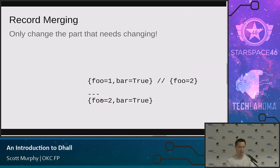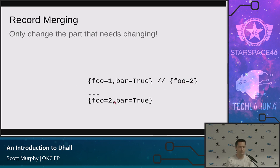Another feature is record merging. You can have some big long record, and if you just want a function that changes just one little piece of it, you can use the diffing slash operator and just change that one piece. So in this case, foo changes from 1 to 2, and the final result is foo equals 2 and bar equals true.